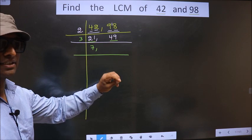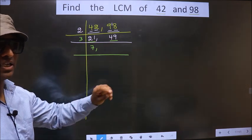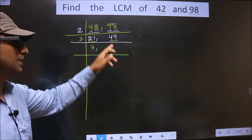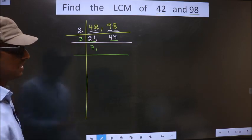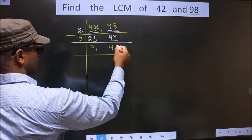That is, 4 plus 9, we get 13. 13 is not divisible by 3. So this number is not divisible by 3. So you write down as it is 49.